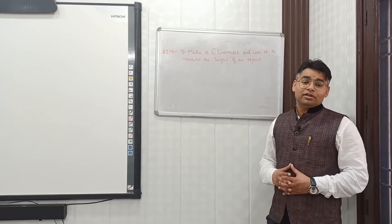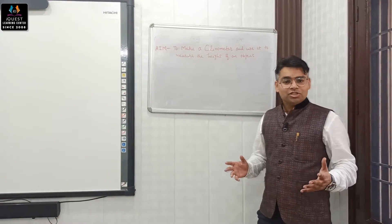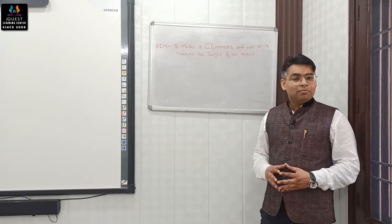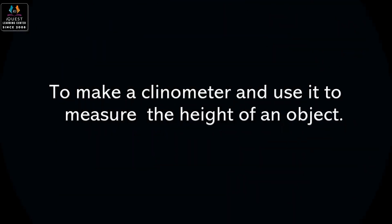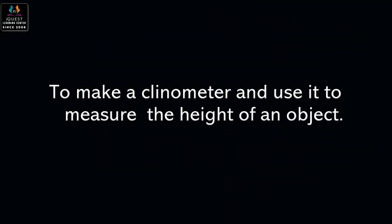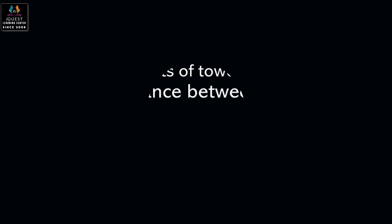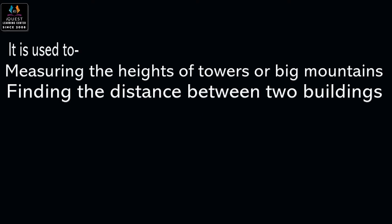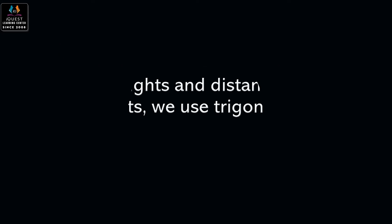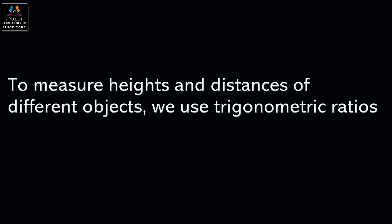Hello everyone, today I am here to explain an activity based upon trigonometry. The aim of the activity is to make a clinometer and use it to measure the height of an object. Trigonometry is one of the most important branches of mathematics. It is used to measure the height of a tower or a big mountain, and finding the distance between two buildings — these are some applications of trigonometry.